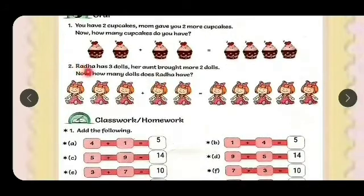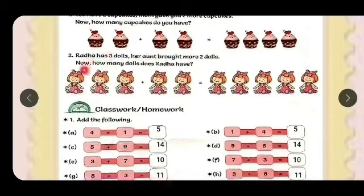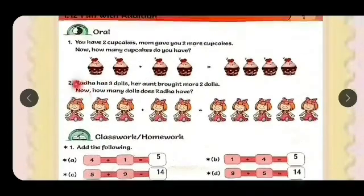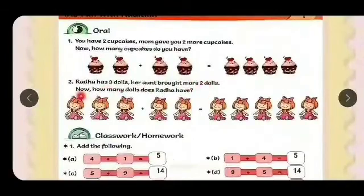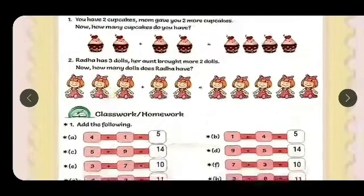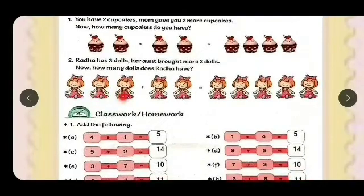Second question: Radha has 3 dolls. Her aunt bought 2 more dolls. So first Radha has how many dolls? 3. And her aunt bought 2 more dolls. Now, how many dolls does Radha have? 1, 2, 3 plus 2: 4, 5. So Radha has 5 dolls all together.